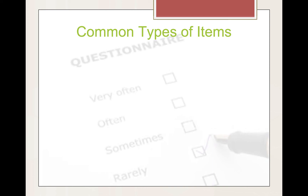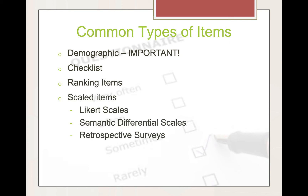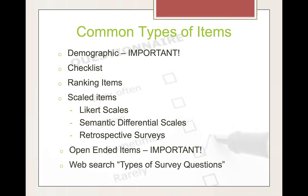Common types of items. Demographic items are very important — they give you a lens through which to see your data. You can have checklist items, ranking items, scaled items like a Likert scale, semantic differential scales, and retrospective surveys. Open-ended items are also very important because they will often tell you why somebody answered the way that they did. For more information, do a web search on types of survey questions.